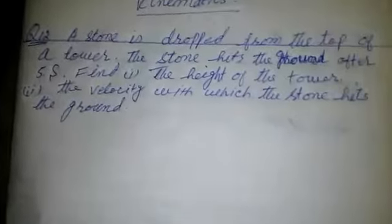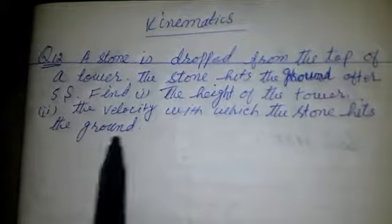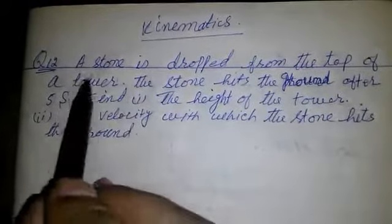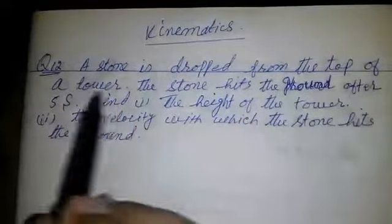Rahman Raheem. Today we have a word problem from kinematics, 9th grade physics. A stone is dropped from the top of a tower.